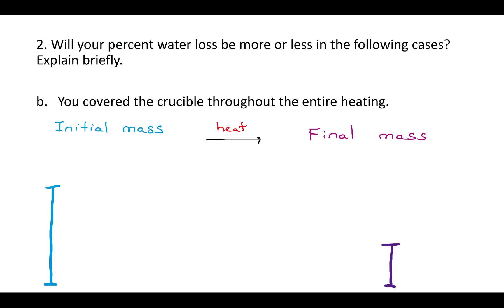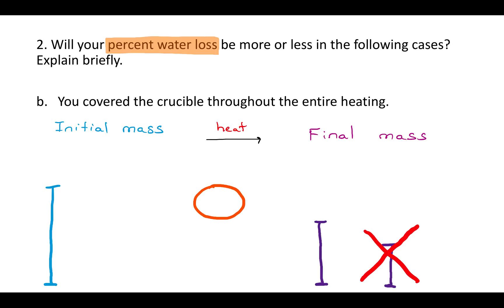For scenario B, it says you covered the crucible throughout the entire heating. That doesn't affect the initial mass at all — the initial mass would stay the same. But if you cover the crucible, then when you evaporate the water from the salt, it will just recondense on the lid of the crucible and drip back down into the salt. So the final mass will be bigger because the water wasn't allowed to escape. The question is, how does that affect the difference between the initial and the final mass, which is the percent water loss?